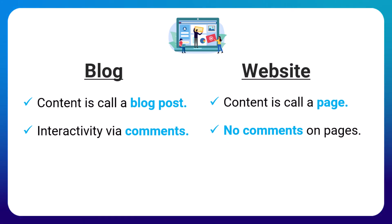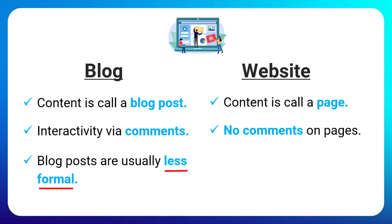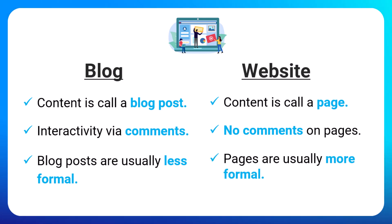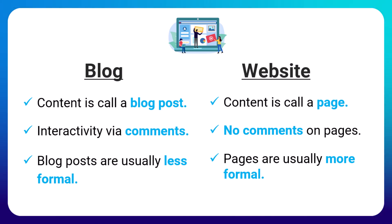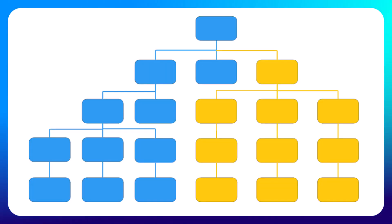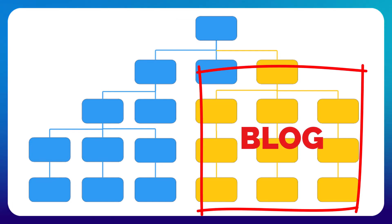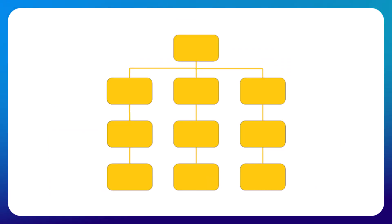Another difference is blog posts are usually less formal and have a more casual and conversational tone. Web pages, on the other hand, are usually a little more formal because they often contain just straight factual information. Structurally, a blog can be part of a traditional website or a blog can be a standalone entity all by itself.